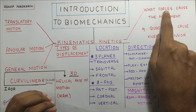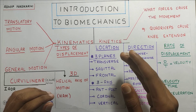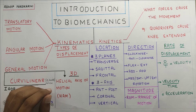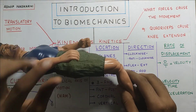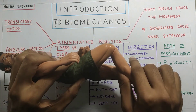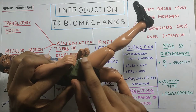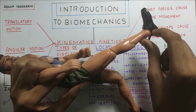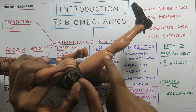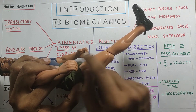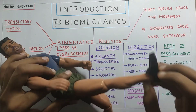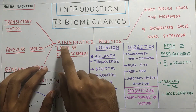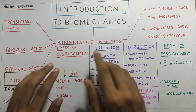Now let us move on to kinetics. Kinetics is basically the 'why' behind any movement — what forces cause the movement. For example, the quadriceps causes extension of the knee joint. As you can see, when Joe straightens his knee, the quadriceps contract and extension is carried out at the knee joint. The study of this force production by the quadriceps to extend the knee is kinetics.